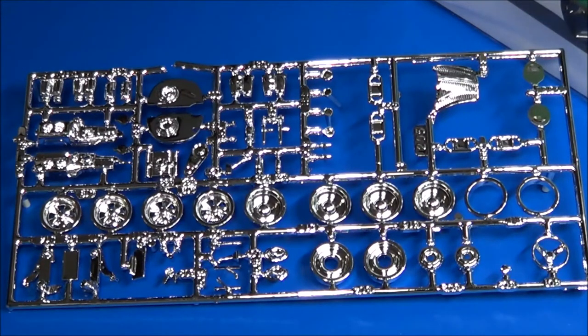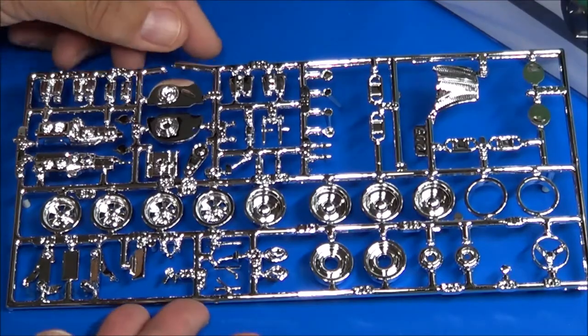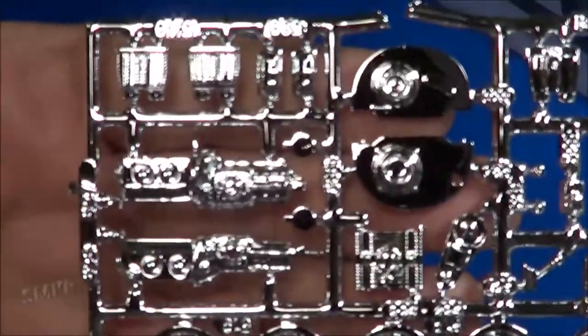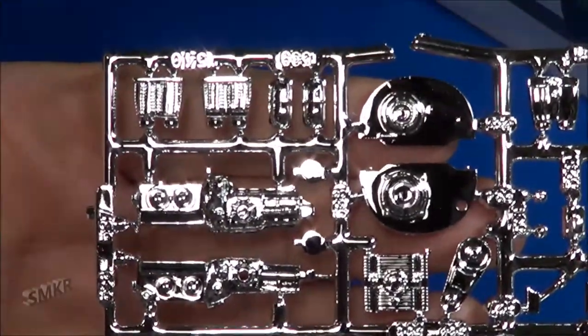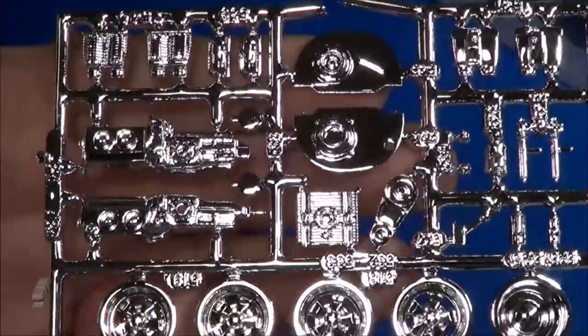Here is the chrome tree. And as you can see, lots of stuff here, lots of chrome parts for the engine. Starting with the engine, the engine block itself, the cylinder heads, the fan shroud tins are all in chrome.